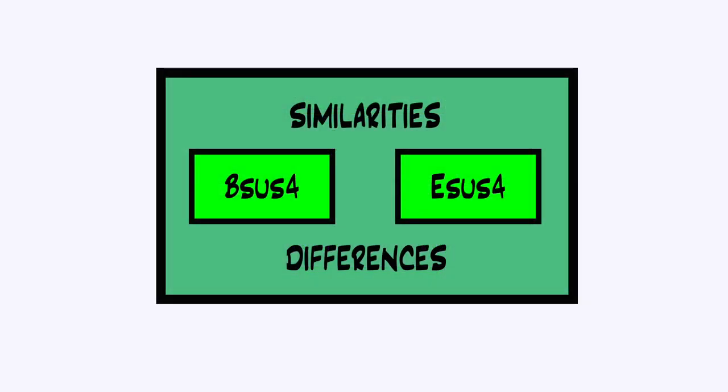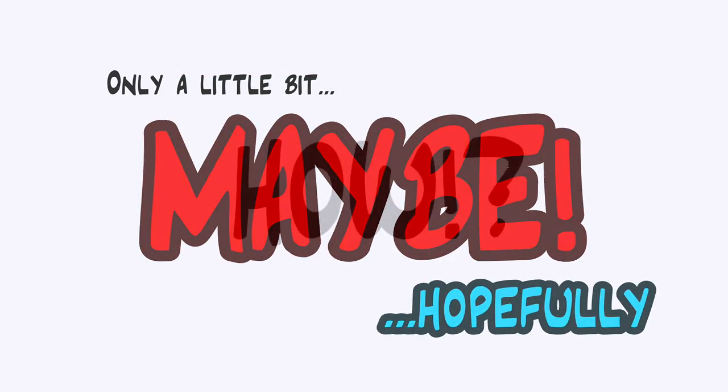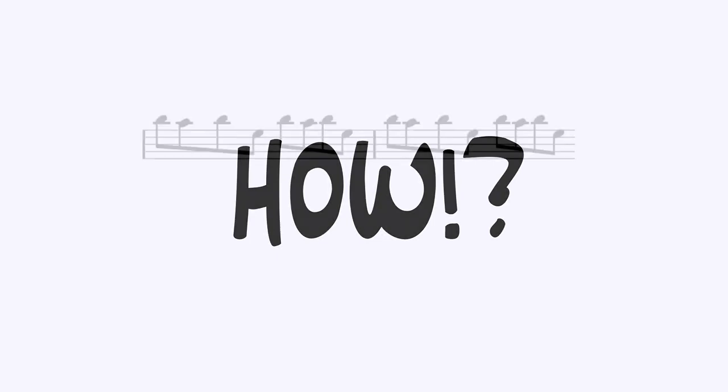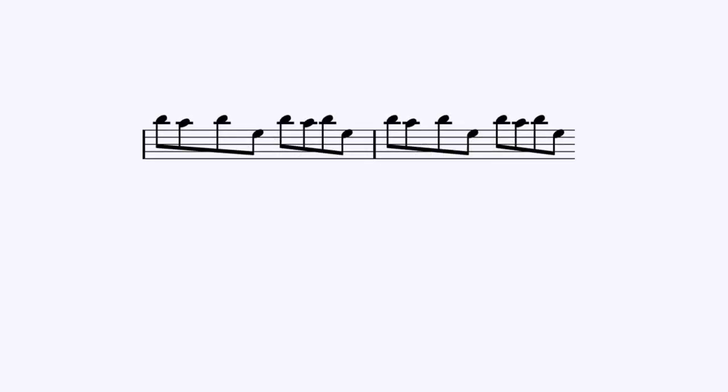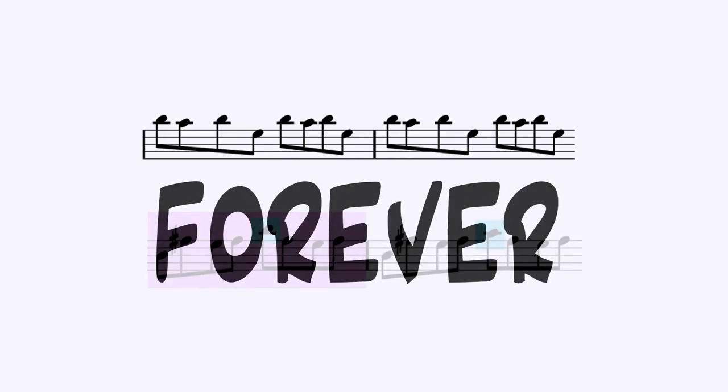Instead, we're gonna talk about how the Sus4 used within this section is similar but also different from the one found in the B section. And then lastly, we'll break away from the Sus4 and talk a little bit about what Mitsuda is doing inside the voicings of the strings. Alright, so how is the ostinato similar and different?